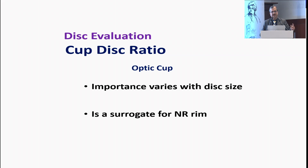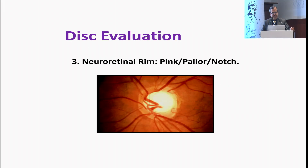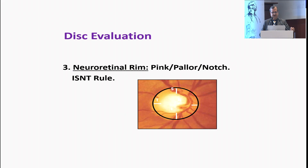The moment you look at the disc with a 90D lens in your chamber, always make a forceful decision as to what is the size of the disc you are looking at. The optic cup is only a surrogate for the neuroretinal rim. When you assess the neuroretinal rim, you need to see whether it is pink, pale, or showing notching.